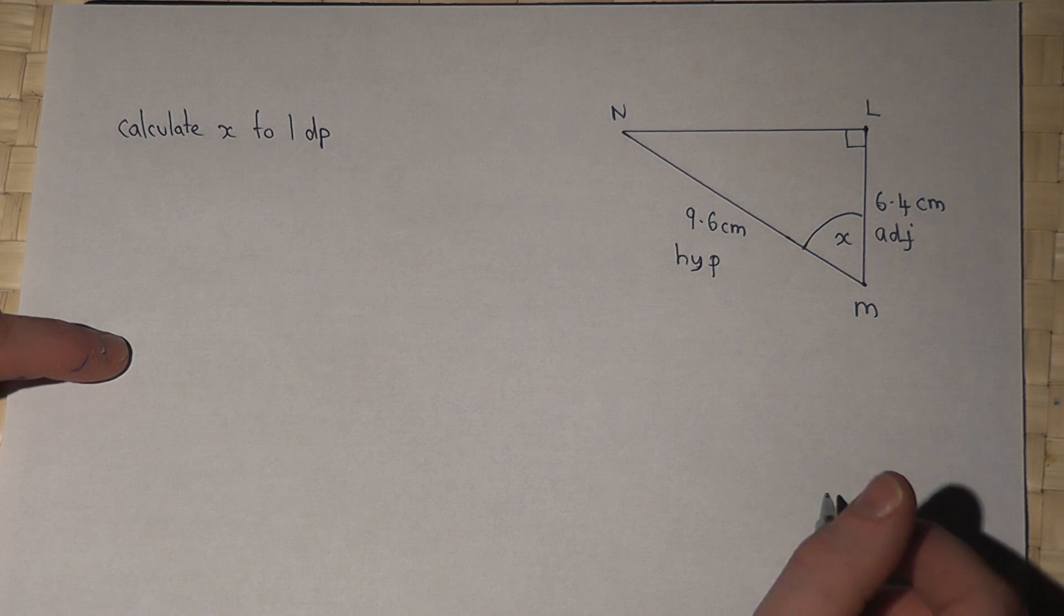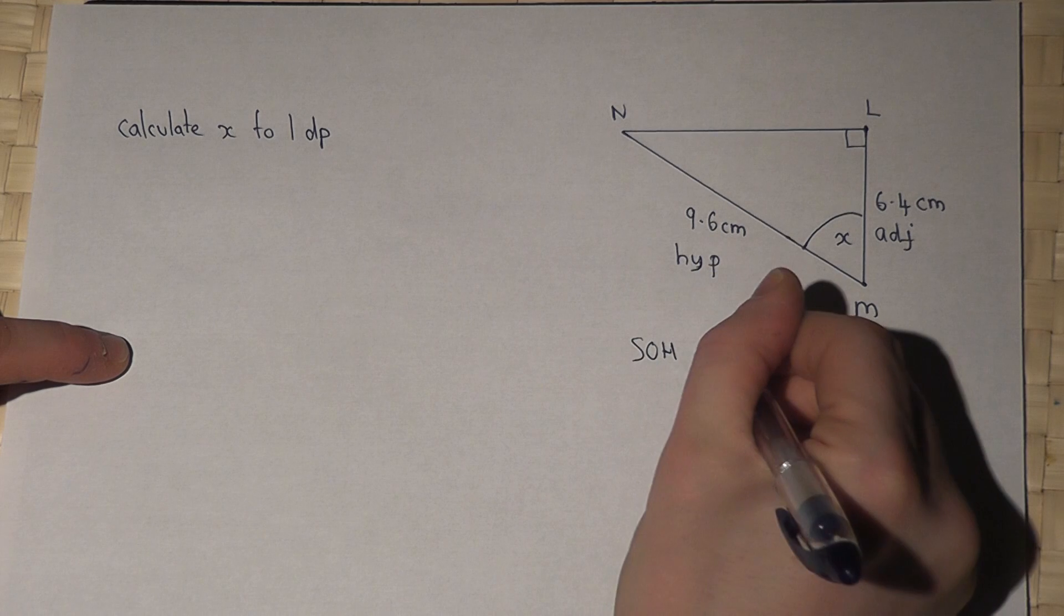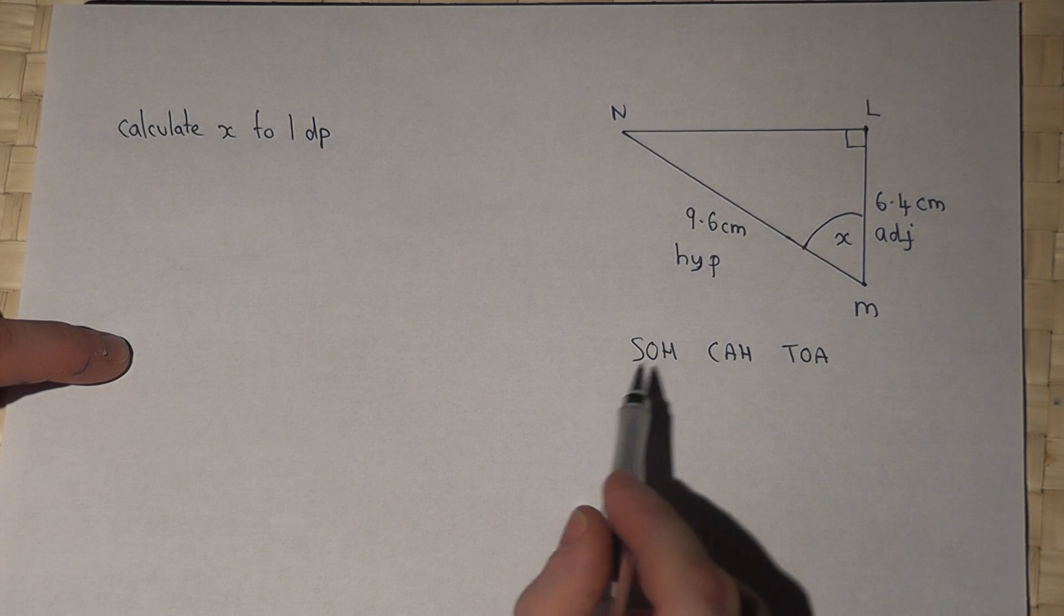Now to solve this will either involve sine, cos or tan. SOHCAHTOA gives us a way of remembering whether it's sine, cos or tan.